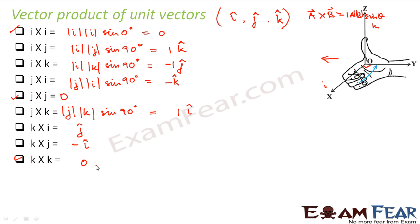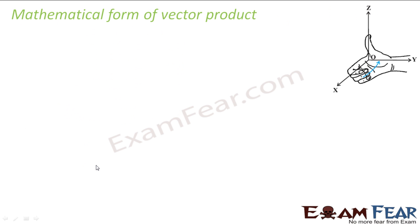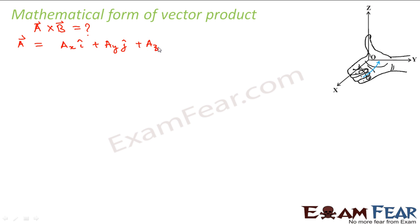This is how we determine the vector product of unit vectors. Now let us look at the mathematical form of vector product — how do we actually calculate or evaluate the cross product of two vectors mathematically. We write both a and b in proper vector form: a = aₓi + aᵧj + a_z k, and b = bₓi + bᵧj + b_z k.